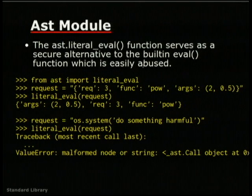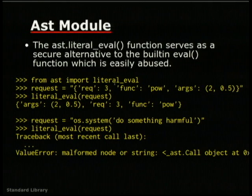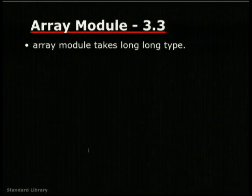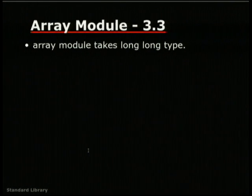In Python 3.2, the AST module provides something called literal_eval, which is much safer than the built-in eval. Eval is considered dangerous to use, and a malformed string will give a ValueError when you attempt a malicious operation using AST eval. The Array module also takes a long type — it's one of the minor improvements but still useful for people using Python in a systems context.